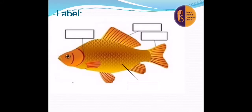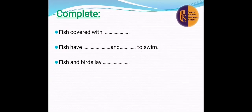Label — who can answer with me? The first part is called gill, fin, tail, and scales. Complete number one: fish are covered with — who can answer? Scales! Excellent. Fish are covered with scales.